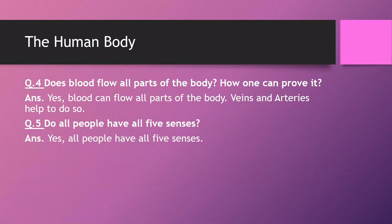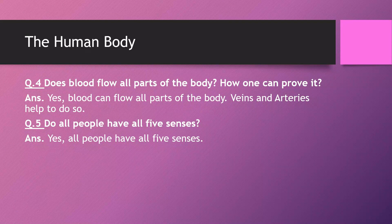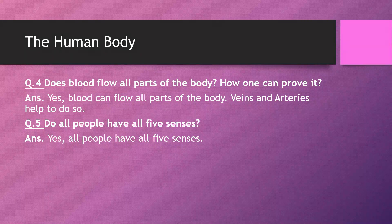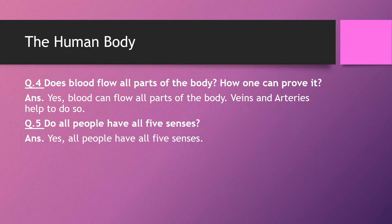Question number four is: does blood flow to all parts of the body and how can one prove it? Yes, blood flows to all parts of the body. Veins and arteries help to do so. We have studied veins and arteries, and they help circulate blood throughout the entire body.